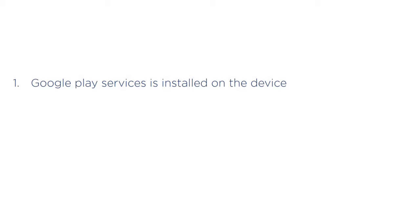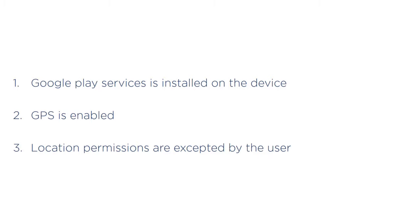In this video we have three main objectives. Number one is making sure Google Play services is installed on the device. If the user doesn't have Google Play services installed, they're not going to be able to use maps. The second is making sure GPS is enabled on the device, since apps can have GPS disabled. The third is making sure we have the required location permissions explicitly accepted by the user. Since Android version 23 (Marshmallow), developers have to explicitly ask users for certain permissions, and location permission is one of those.